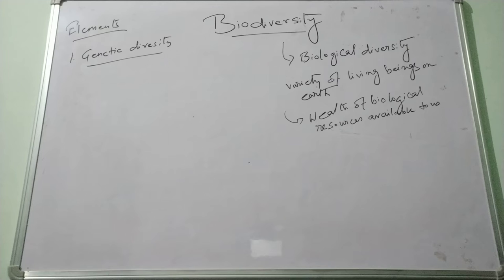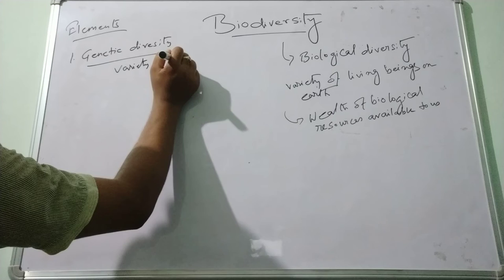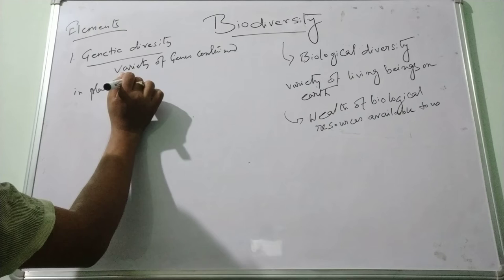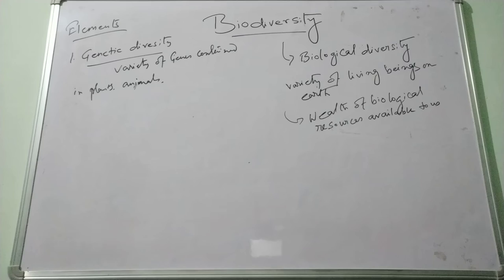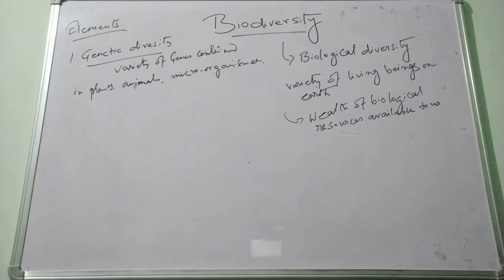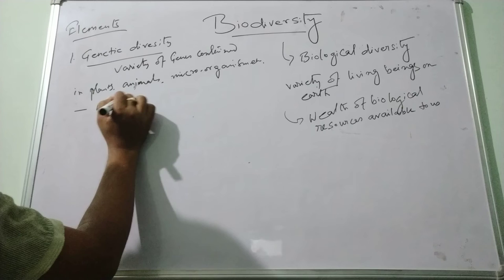Genetic diversity corresponds to the variety of genes of plants and animals. This genetic diversity may occur within species as well as between species.